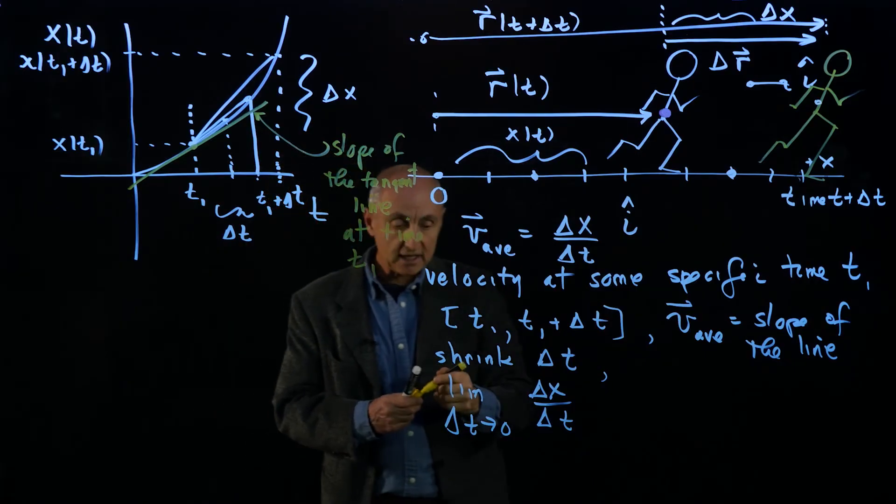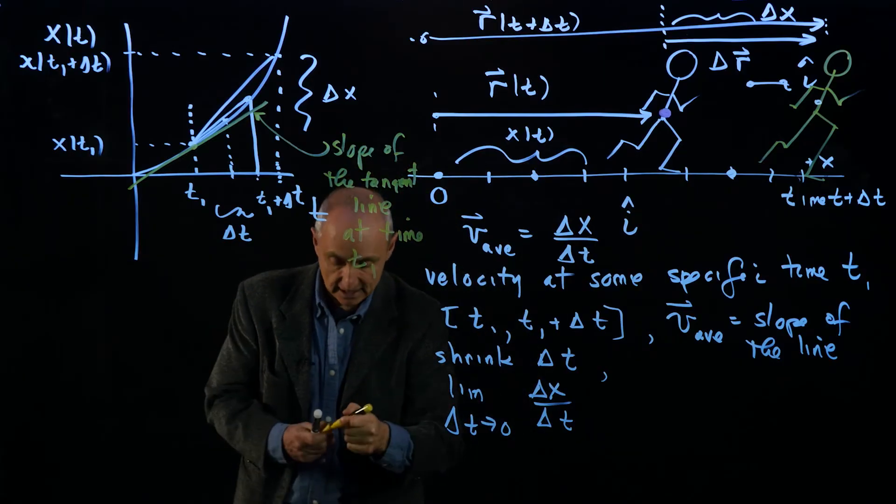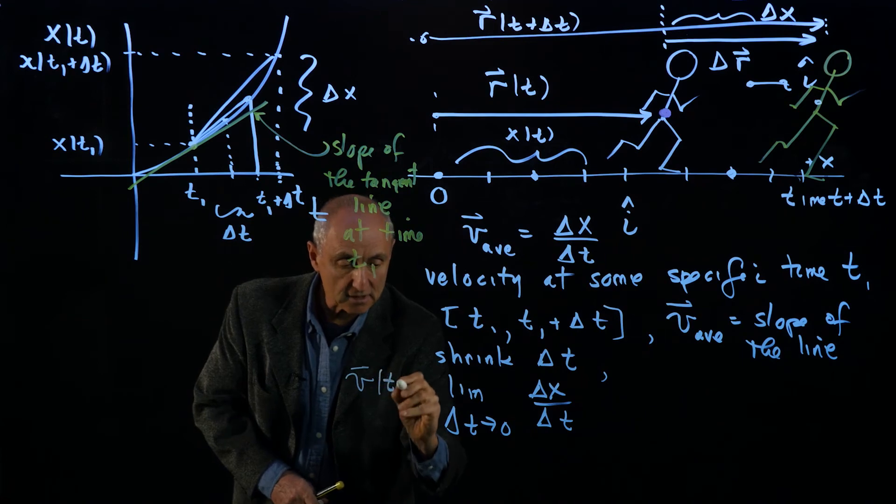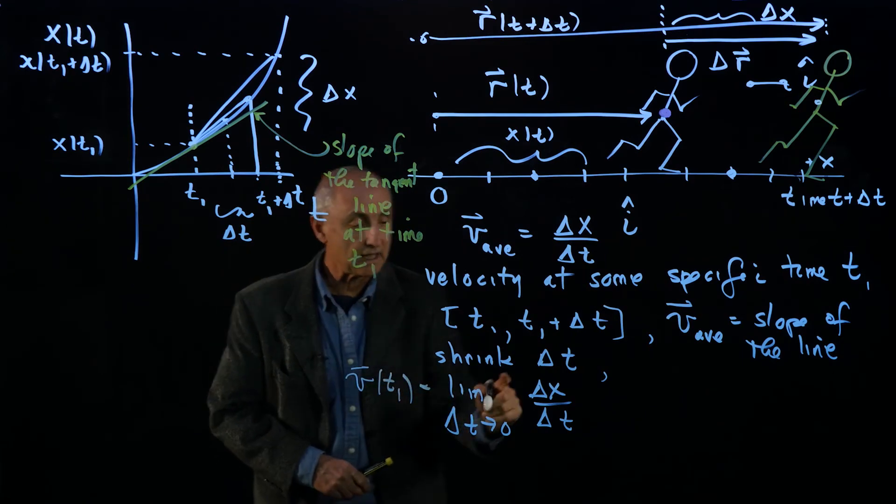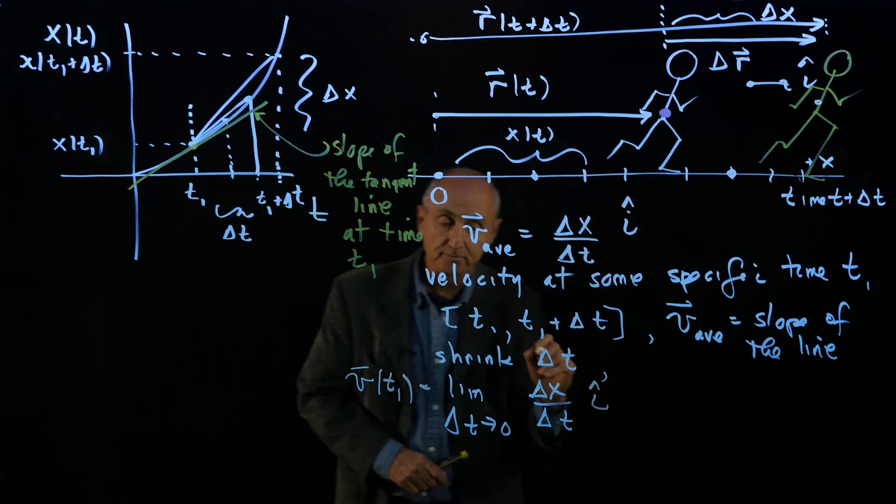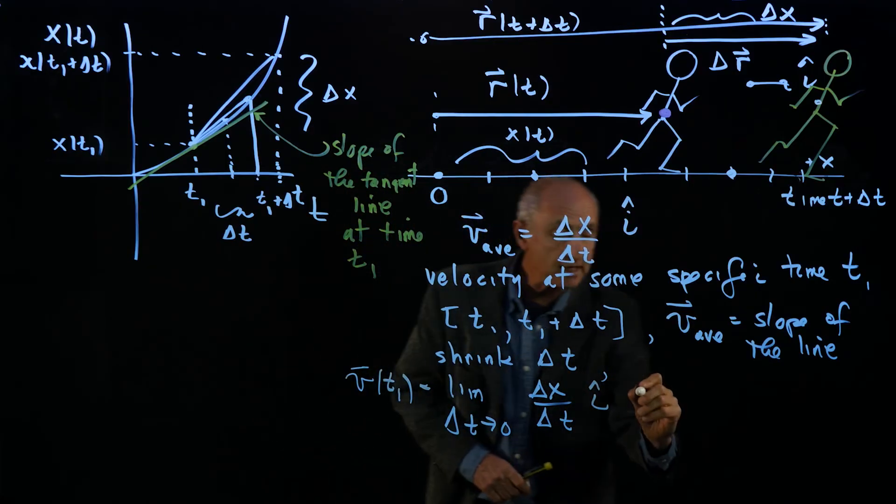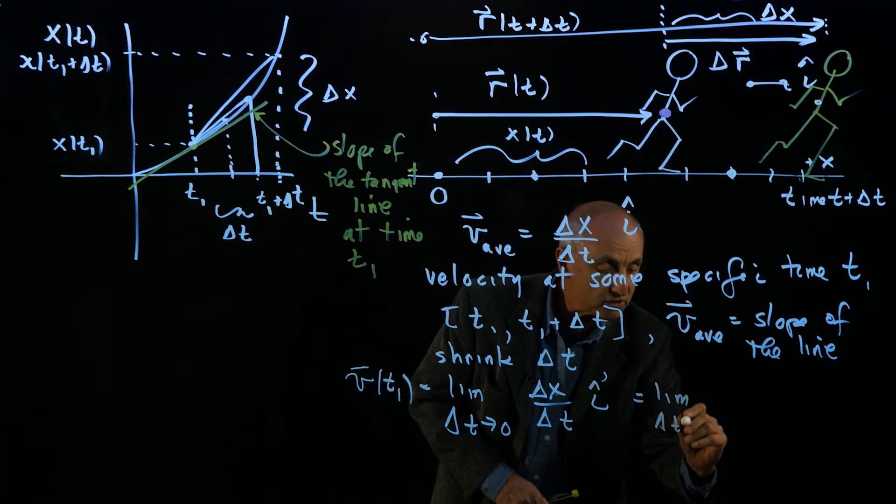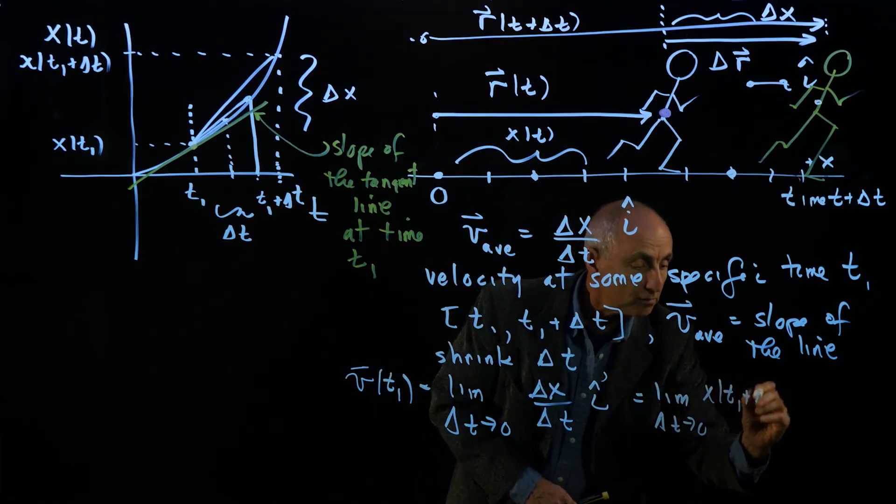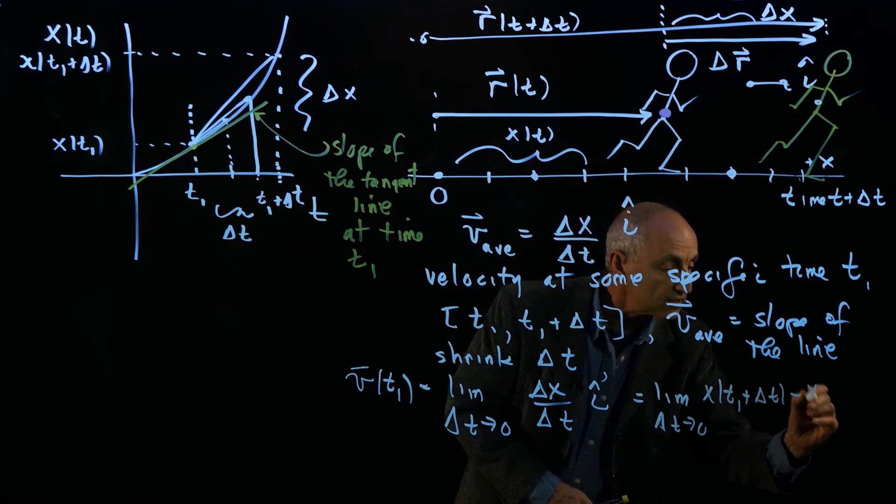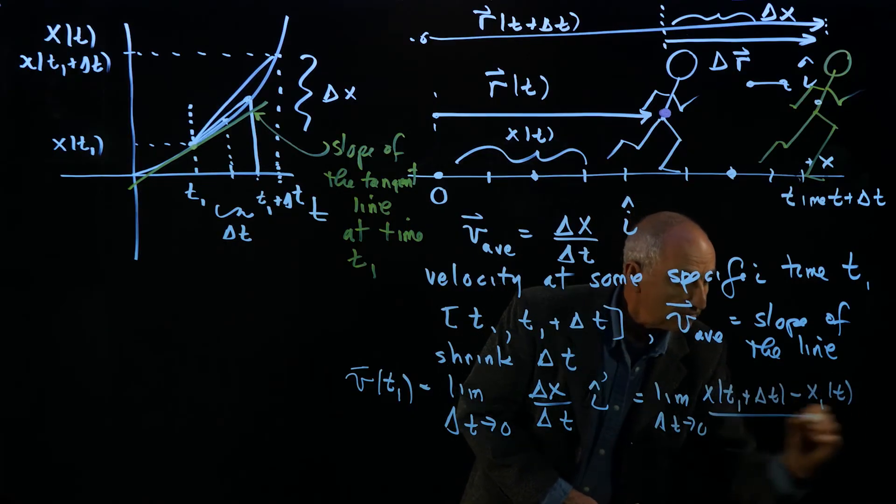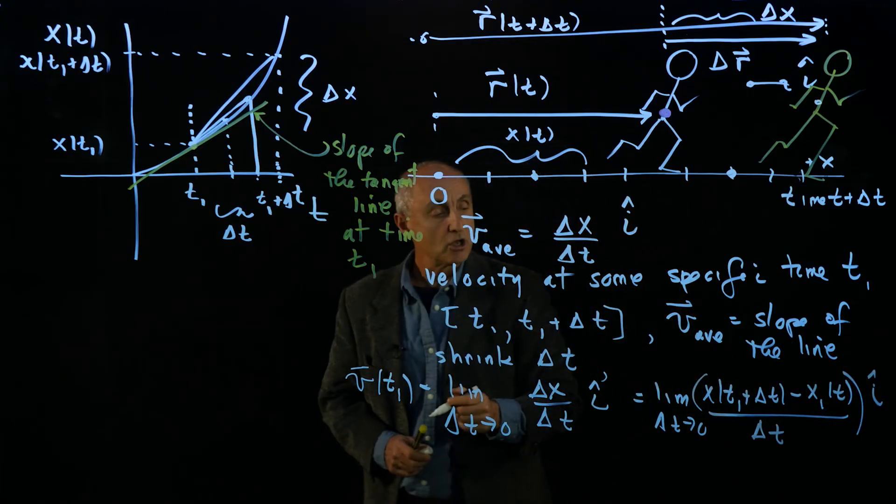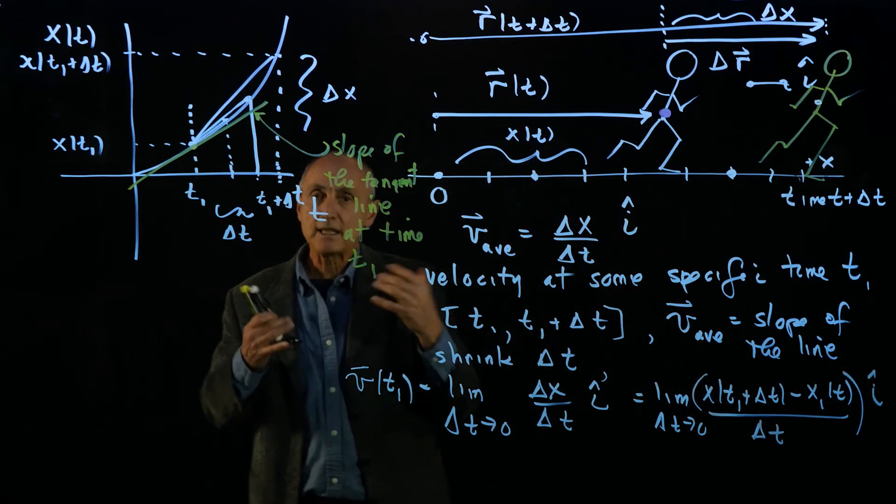And so in this particular case, what we mean by the instantaneous velocity, v at time t1 is the limit as delta t goes to zero of delta x over delta t i hat, where we're taking this limit delta t goes to zero of x at t1 plus delta t minus x of t1 divided by delta t, and the whole thing is a vector i hat. So what a limit is, is a sequence of numbers.